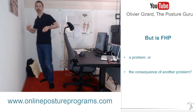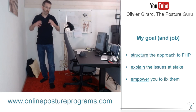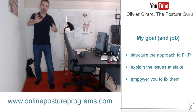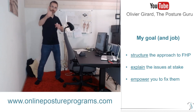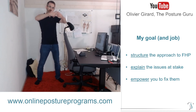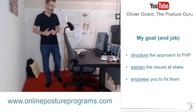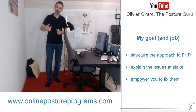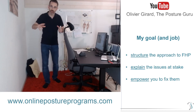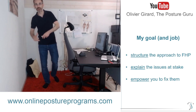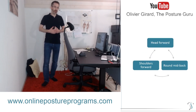Forward head posture is the consequence of a vicious cycle. So the goal in the next 40–50 minutes is: one, bring structure to the approach to forward head posture; two, explain what happens; and three, empower you to fix the problem — in other words, teach you to be autonomous in the analysis and definition of a plan of action.